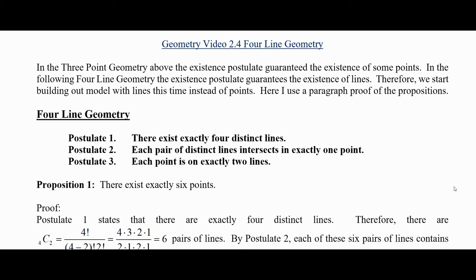Postulate one, there exists exactly four distinct lines. Postulate two, each pair of distinct lines intersects in exactly one point. And postulate three, each point is on exactly two lines.